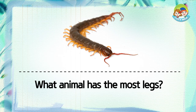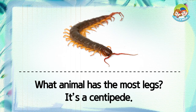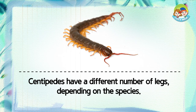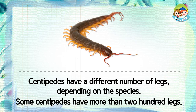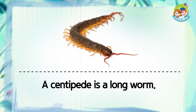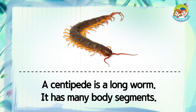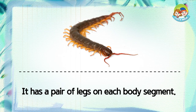One animal has the most legs — it's a centipede. Centipedes have a different number of legs depending on the species. Some centipedes have more than two hundred legs. A centipede is a long worm. It has many body segments.